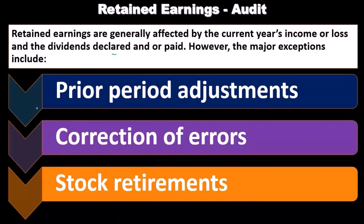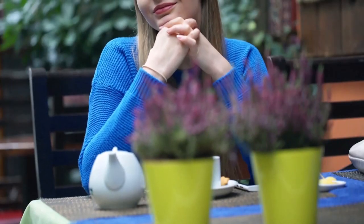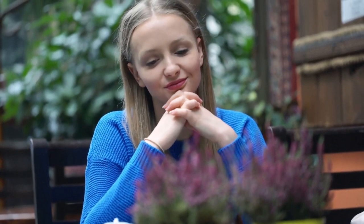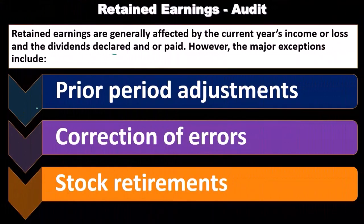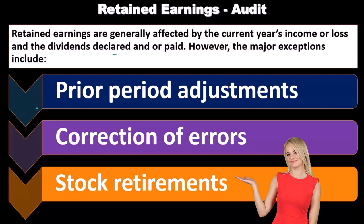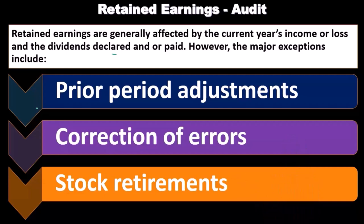If retained earnings doesn't tie out as it should, you need to go back and figure out what happened. The easiest way is to line up the balance sheet accounts as they are in the current system for the beginning of the period and match them to the audited or completed financial statements from the prior period. Take the difference, see which accounts are off, and then determine what prior period adjustment happened and whether it's correct.